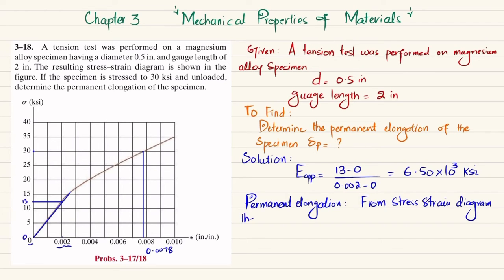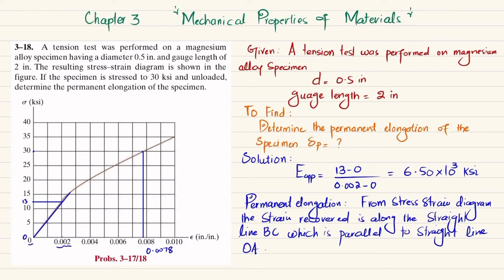From the stress-strain diagram, the strain recovered is along the line BC, which is parallel to the straight line OA. We can find this permanent strain.